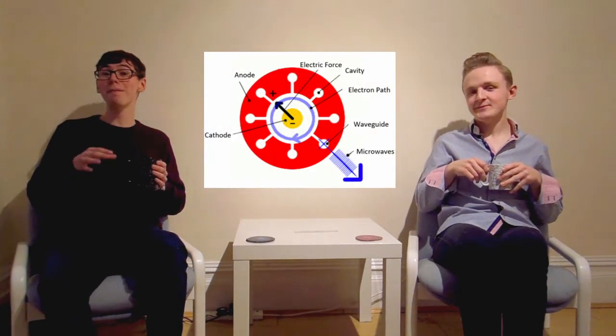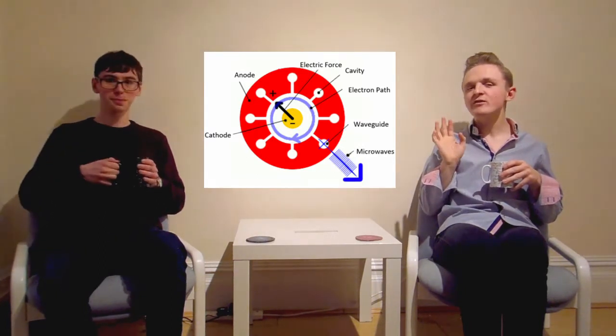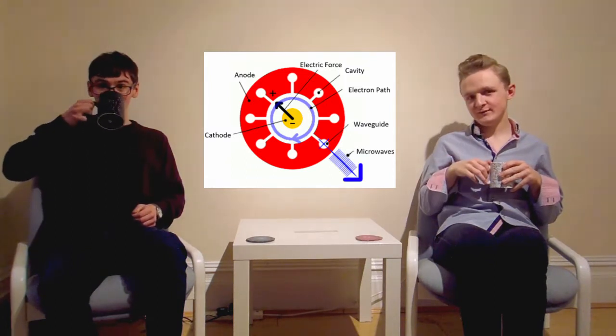The microwaves that we're interested in have wavelengths of around 12 centimetres. A question you might reasonably ask is: where do these microwaves come from? The microwaves used in your microwave are produced in a cavity magnetron, which sounds a bit like some sort of robot from a sci-fi film. But I digress. It consists mainly of a negatively charged metal rod, or cathode, surrounded by a positively charged ring of metal, or anode. Note that the anode has lots of holes, or cavities, cut out of it.